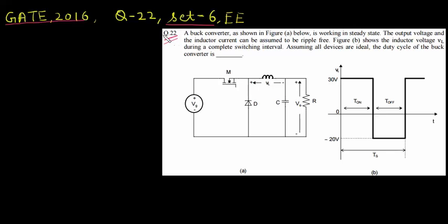So what we have got is a buck converter which is working in steady state. The output voltage and the inductor current can be assumed to be ripple free. So this is the output voltage across the resistor and inductor current is flowing like this. Figure B shows the inductor voltage VL during the complete switching interval, so we have got one ON interval and one OFF interval.